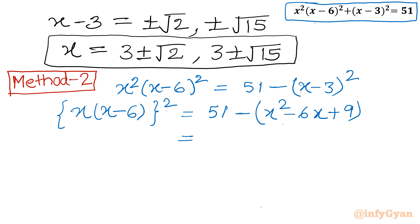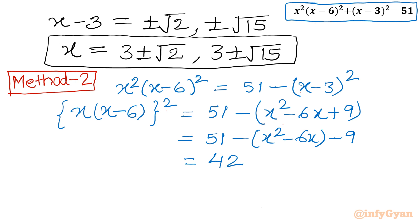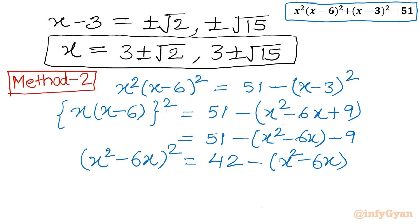From this side I can write 51 minus (x² minus 6x plus 9), which is 51 minus 9 equals 42, minus x² minus 6x. On the left-hand side, if you multiply, it becomes (x²-6x)². Now our obvious substitution will be: let x² minus 6x equal to a.